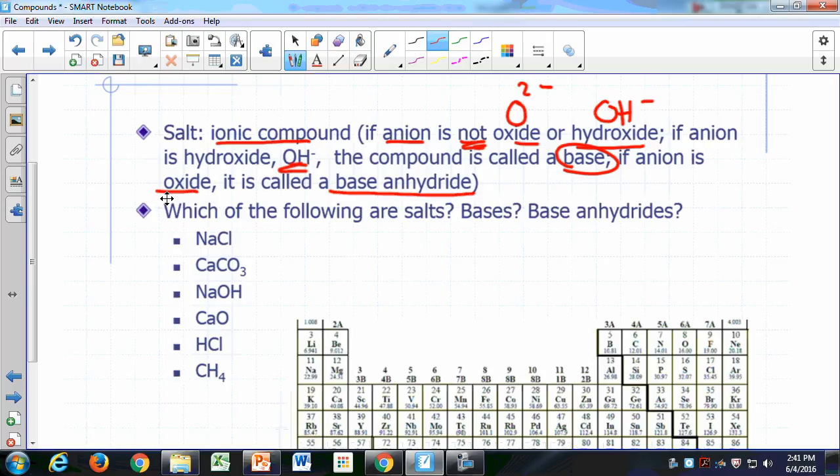So let's look at these examples right here. NaCl, is that a salt? And the reason, it's an ionic compound, sodium is a metal, and chloride is not hydroxide, it's not oxide, so this is a salt. And that's your common table salt.